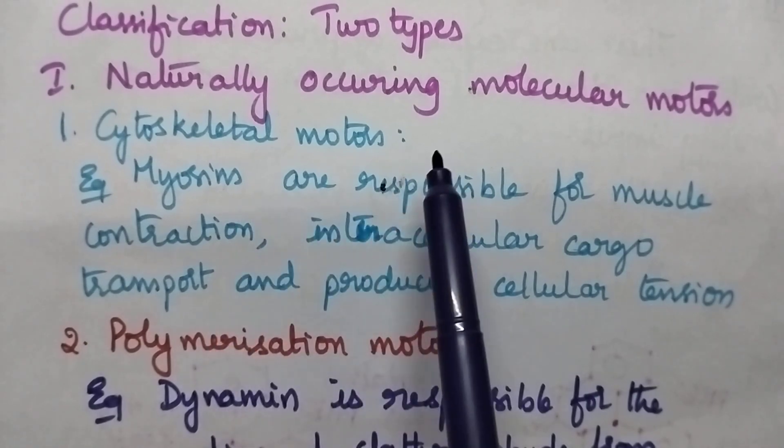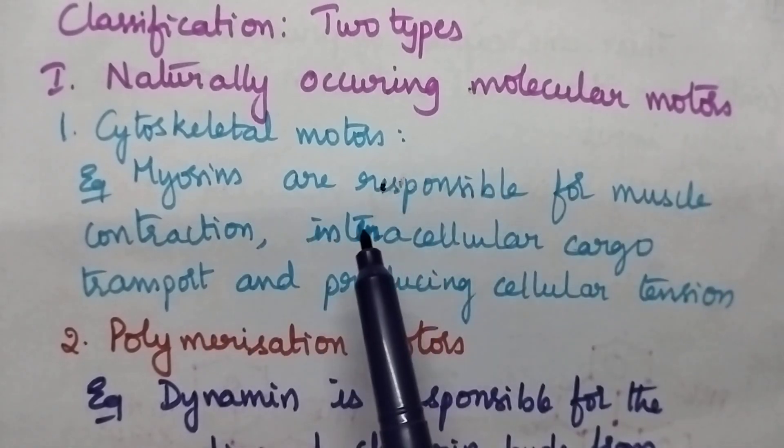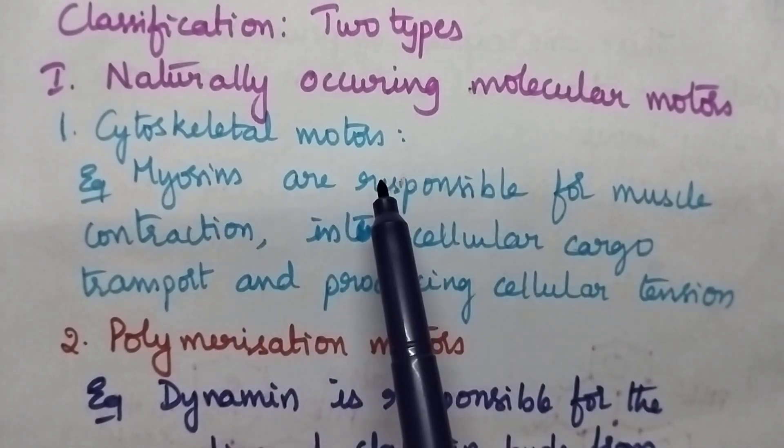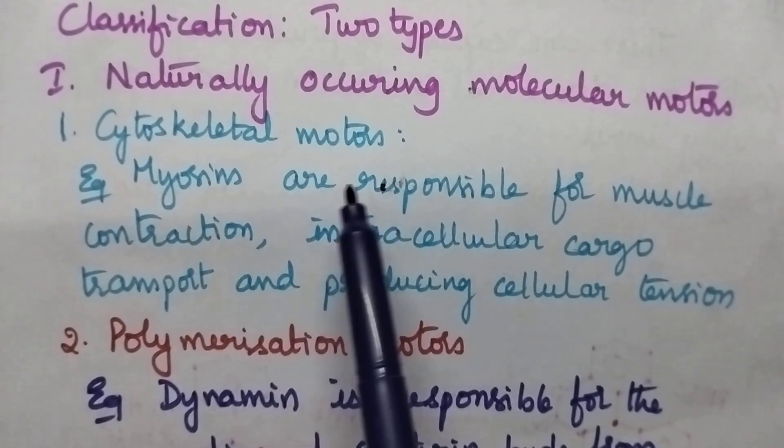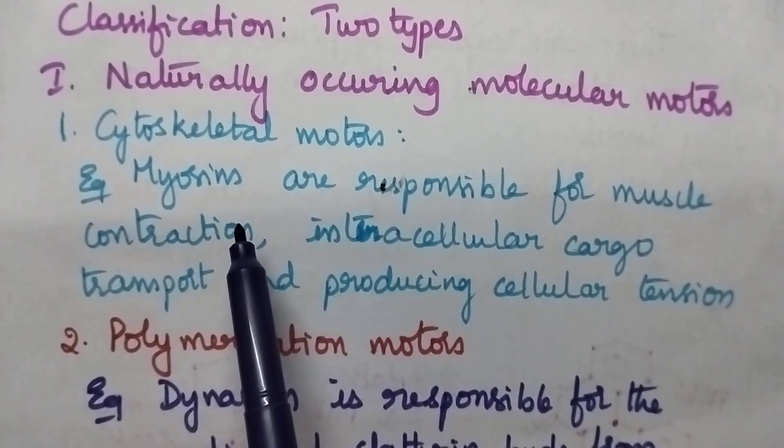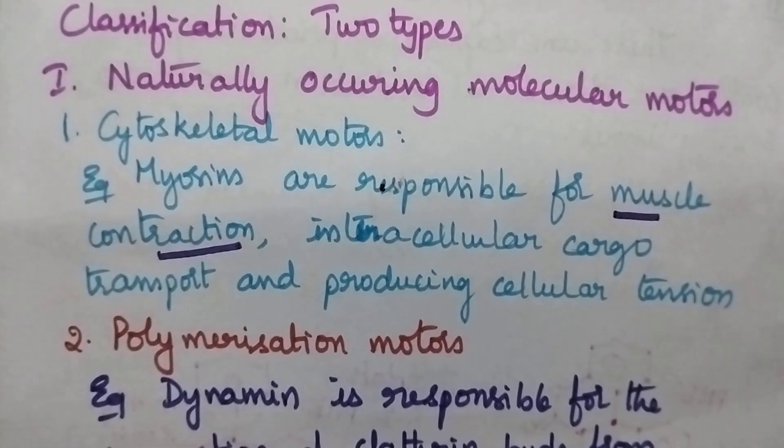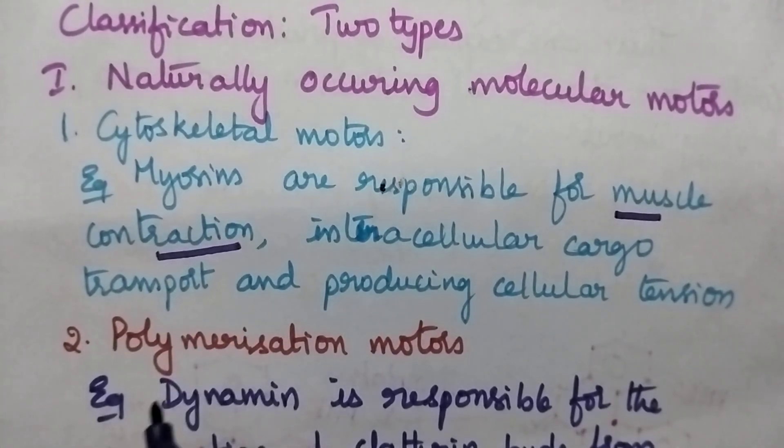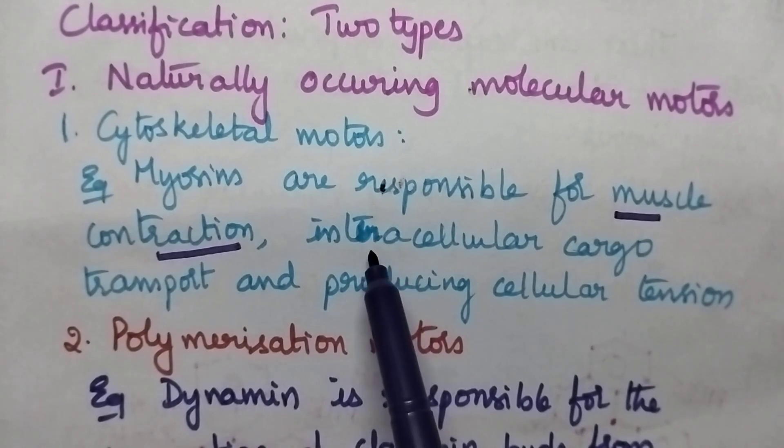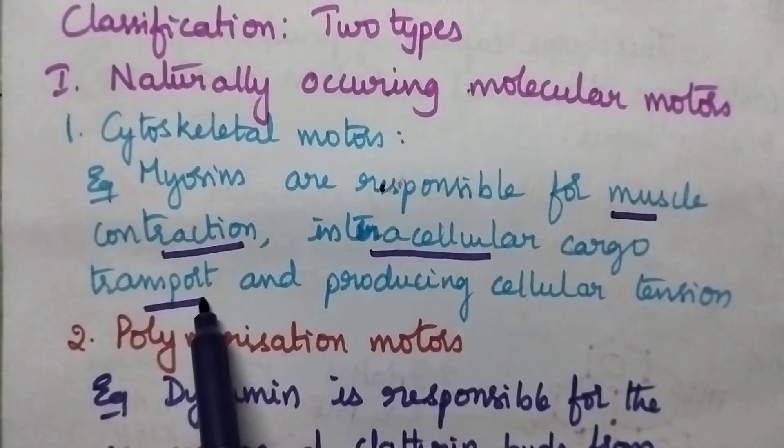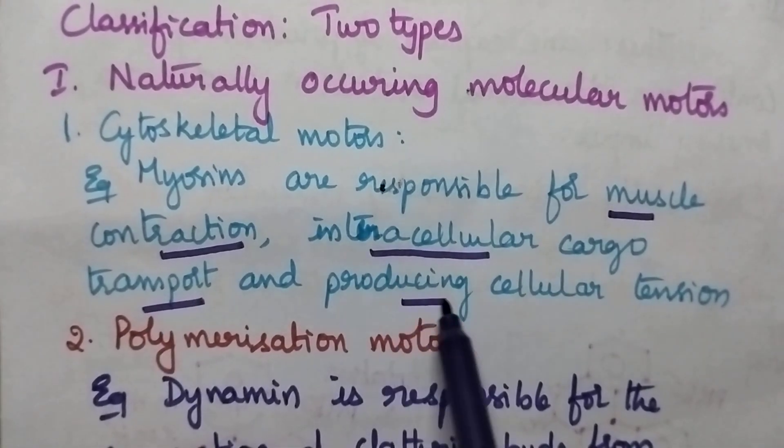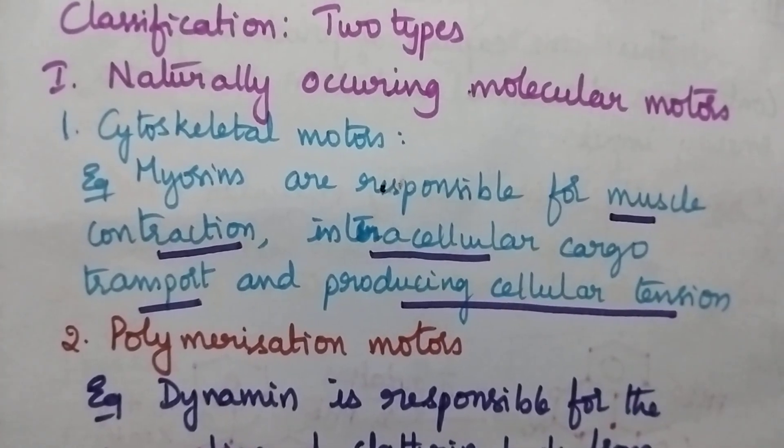Coming to naturally occurring molecular motors, they include cytoskeletal motors. Cytoskeletal motors include myosin, which is responsible for muscle contraction. At the same time, myosin is also responsible for intracellular cargo transport and producing cellular tension.